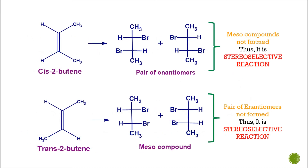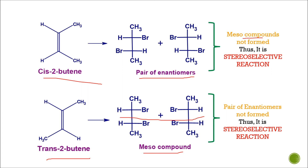Now let us take another example of cis-2-butene and trans-2-butene. Here, cis-2-butene after bromination gives a pair of enantiomers, while trans-2-butene after bromination gives the meso compound. Since cis-2-butene gives only a pair of enantiomers and not the meso compound, this reaction is stereoselective. Similarly, trans-2-butene gives only the meso compound and not a pair of enantiomers, so it is also a stereoselective reaction.